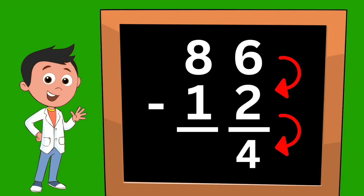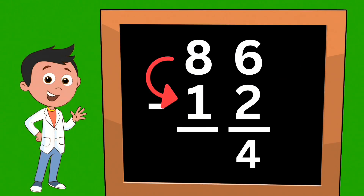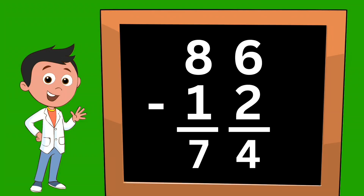Now let's move to the left, subtracting our tens. Eight minus one equals seven. And that gives us our answer. Our answer is seventy-four.